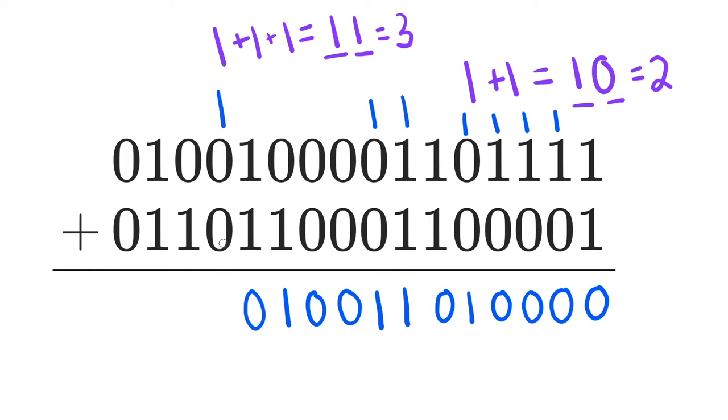1 plus 0 plus 0 is 1. 0 plus 1 is 1. 1 plus 1 is 2 again. We put the 0, carry the 1. And then 1 plus 0 plus 0 is 1. So there we have it. This number is the answer to adding these two 16-bit binary numbers together.